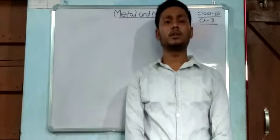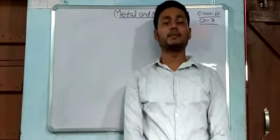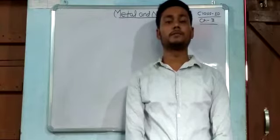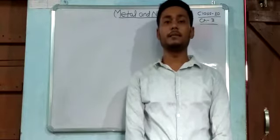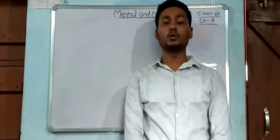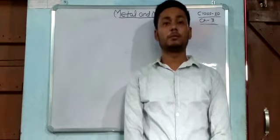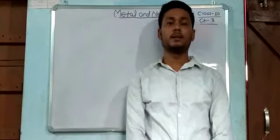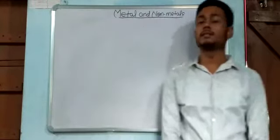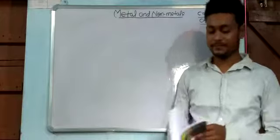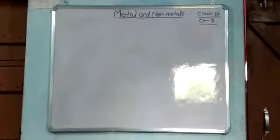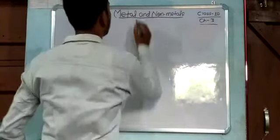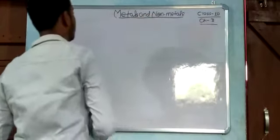Apart from these, some elements show both properties of metals and non-metals. Those elements which show properties of both metal and non-metal are known as metalloids. Let us start this chapter with metals.